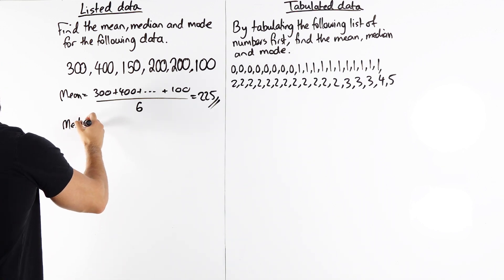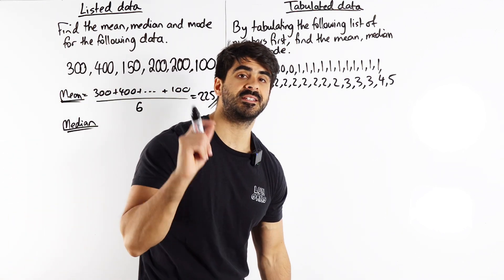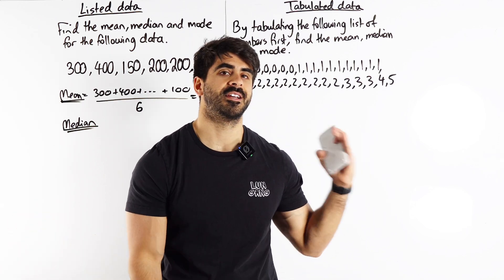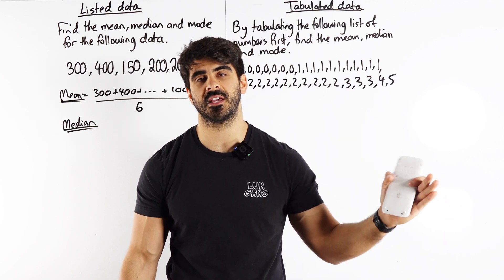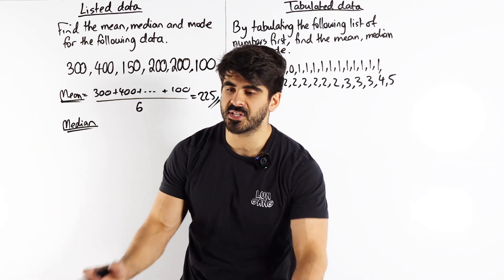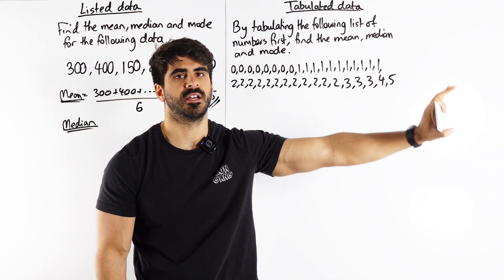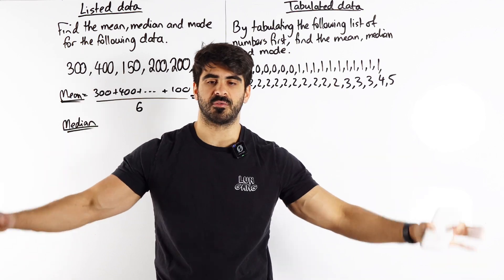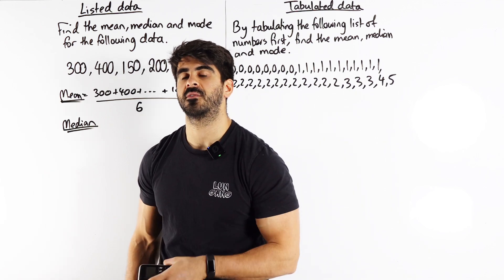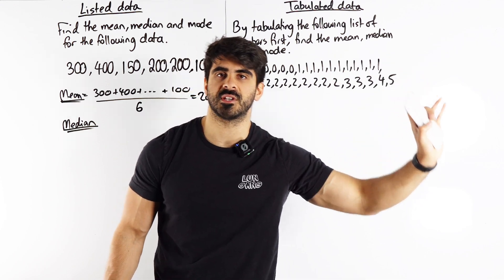The next one is the median. You need to put all numbers in order and find the middle value. The median is great because it isn't skewed by extreme values. Think about Microsoft salaries — the CEO earns millions every year while an intern earns $20,000. That extreme salary skews everyone's salaries up. If you search mean salary UK versus median salary UK on Google, you'll find the median is lower because the mean is being skewed upward.